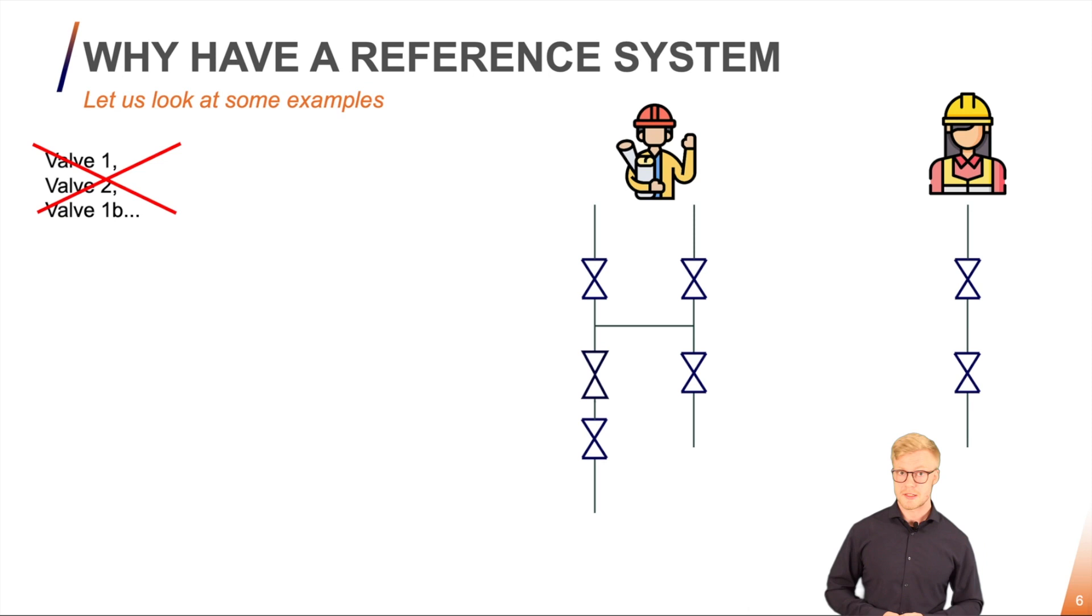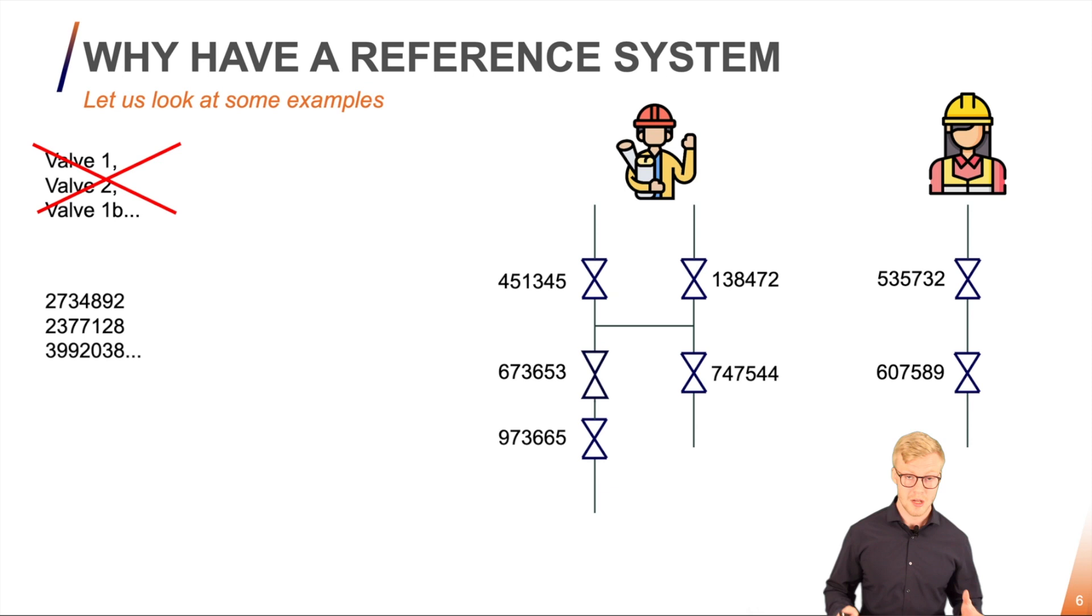Let's try to think of something else. Let's try to think of the most unambiguous thing that we can. Just randomly generate numbers, unique numbers, and associate each number to a component. Now we have unambiguity.